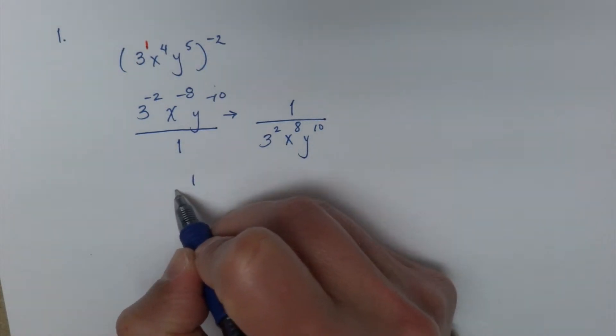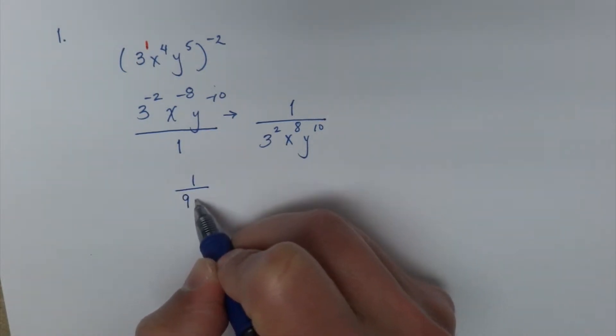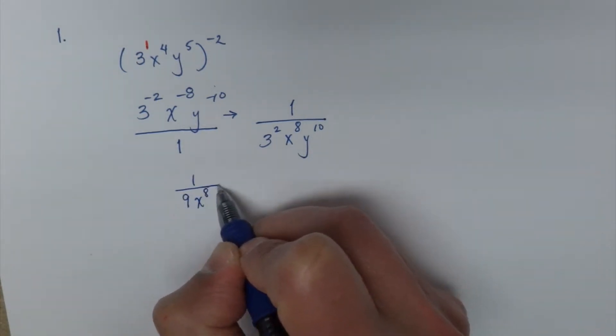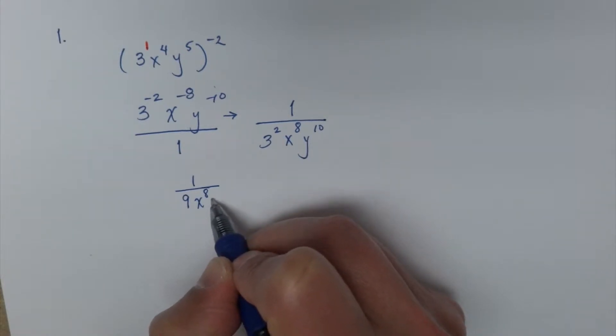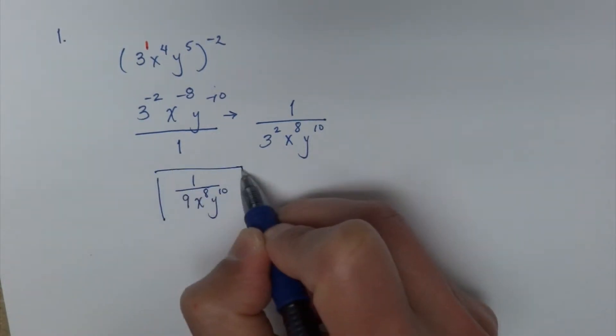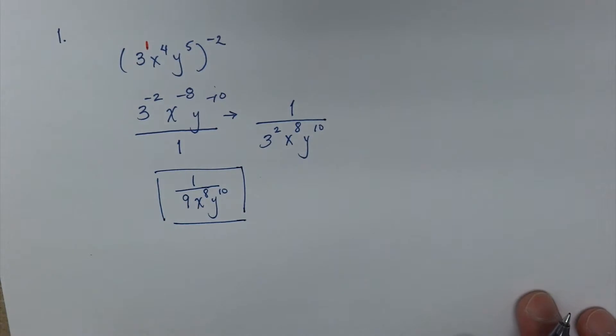And finally my answer can be simplified further. It's 1 over 9, x to the 8th, y to the 10th and that's your answer.